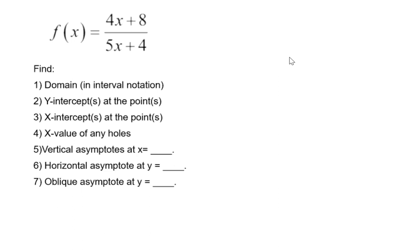All we need to do to find the domain is determine which values of x should not be allowed. So if we just take the denominator here and set it equal to 0, or rather say it should not be allowed to be 0, and then solve, we will have the one value of x that needs to be excluded.